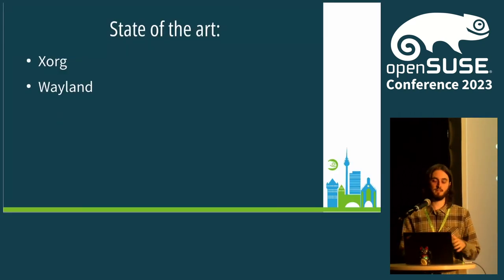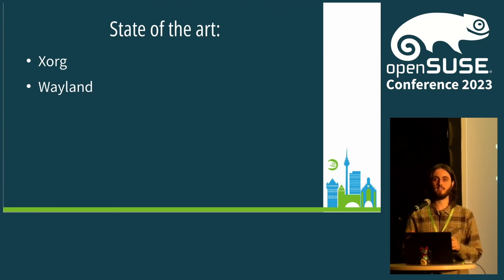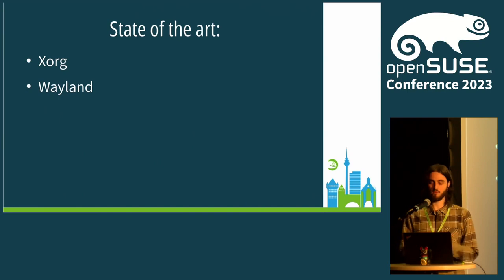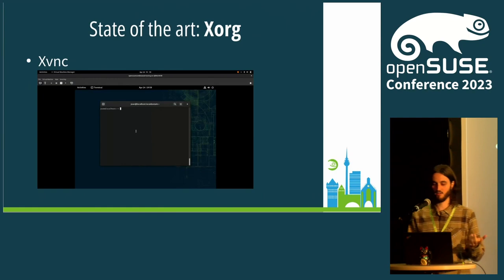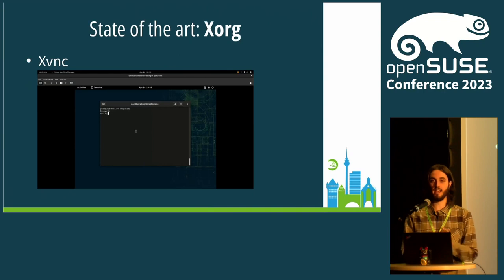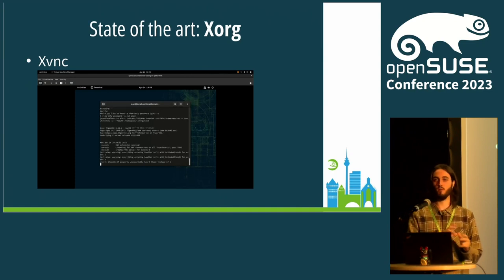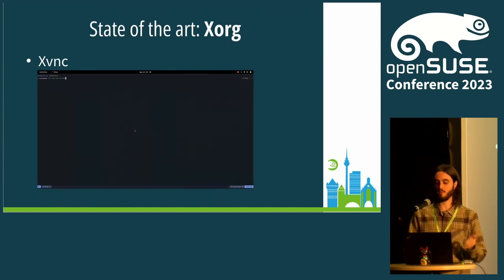First I'd like to introduce you to the subject, speaking a bit about the state-of-the-art — about the current approaches we have that provide remote desktops with X.org and with Wayland. Most of these approaches are daemons. With X.org, there's XVNC. XVNC is a daemon that starts a headless X.org server and on top of it you can start any desktop environment you want. It uses the VNC protocol to provide remote access.